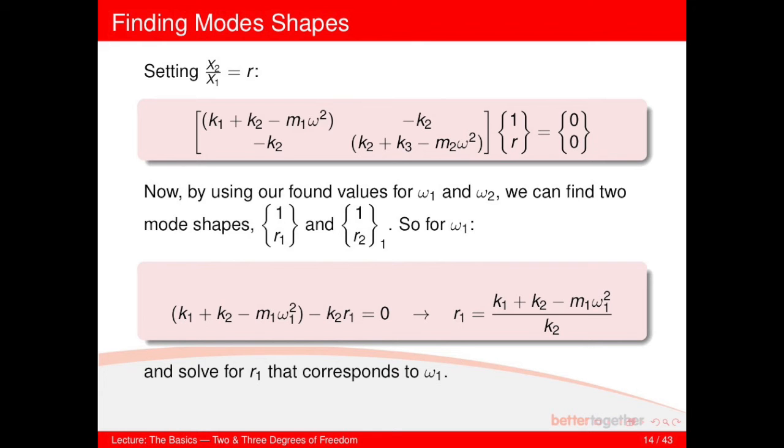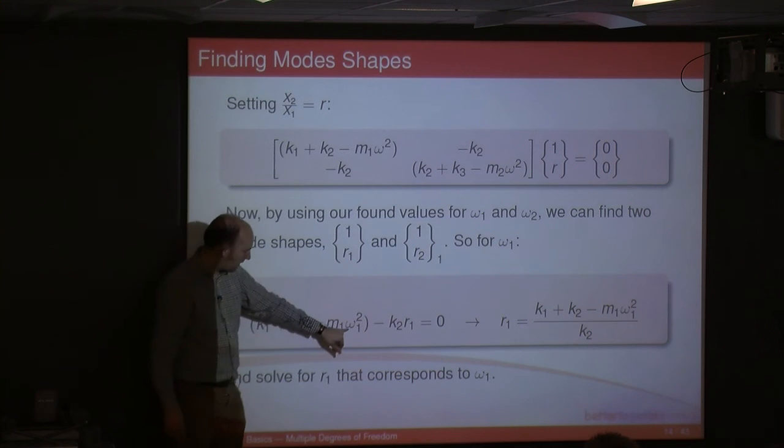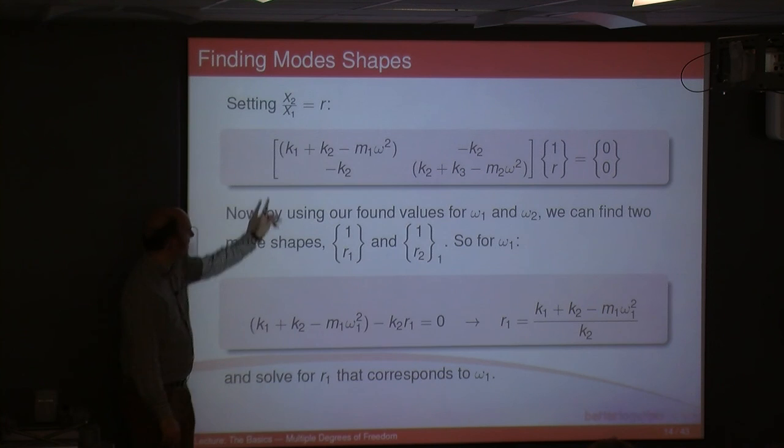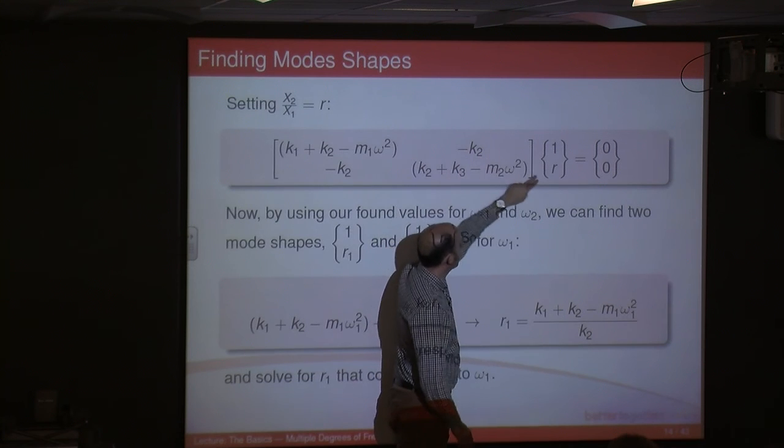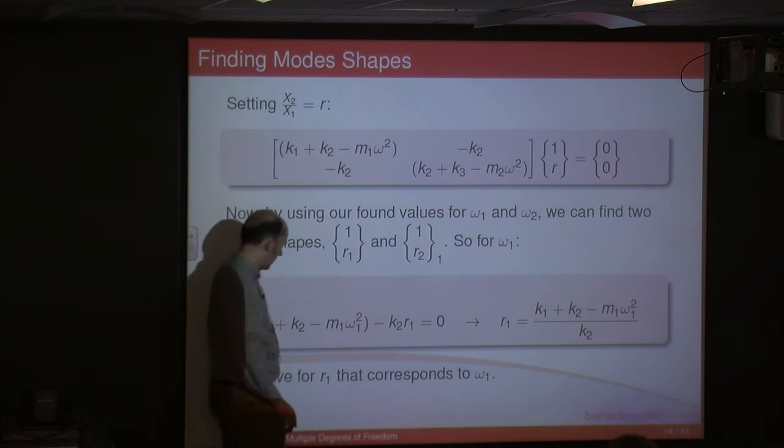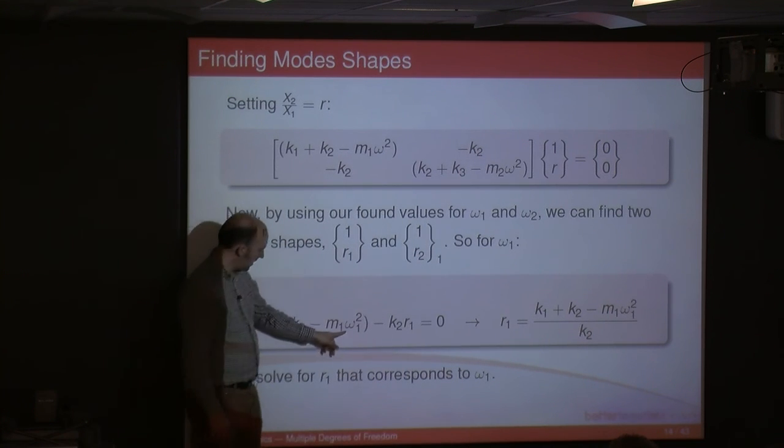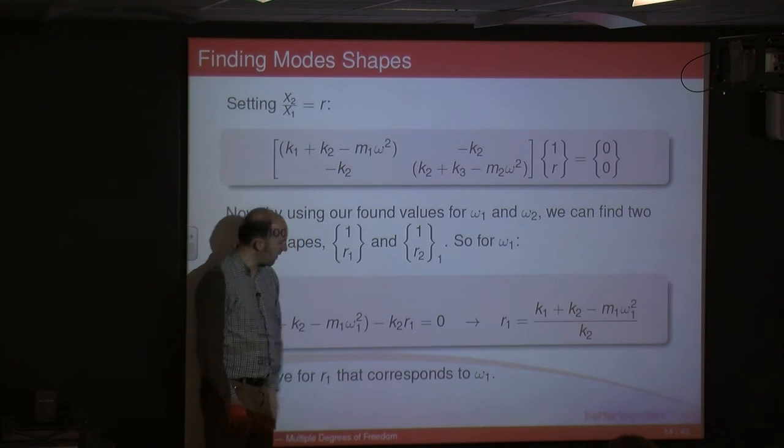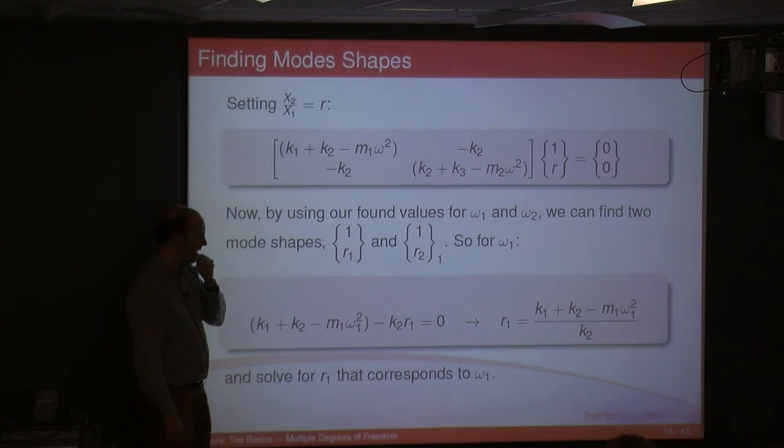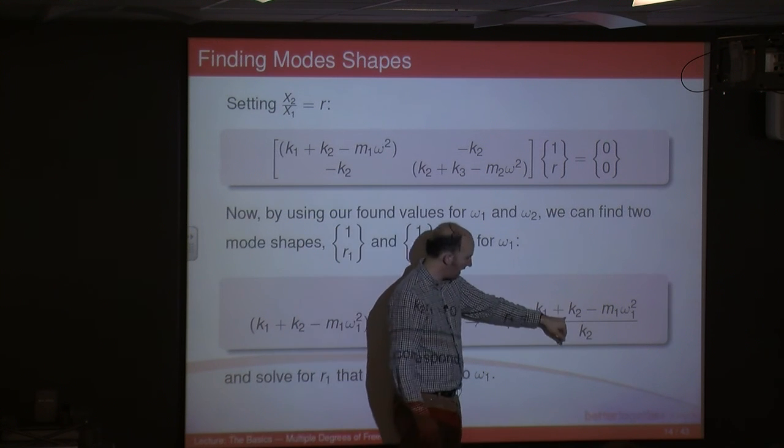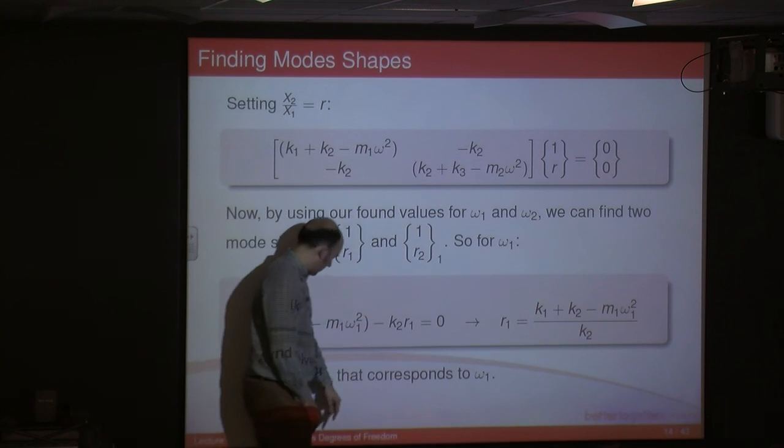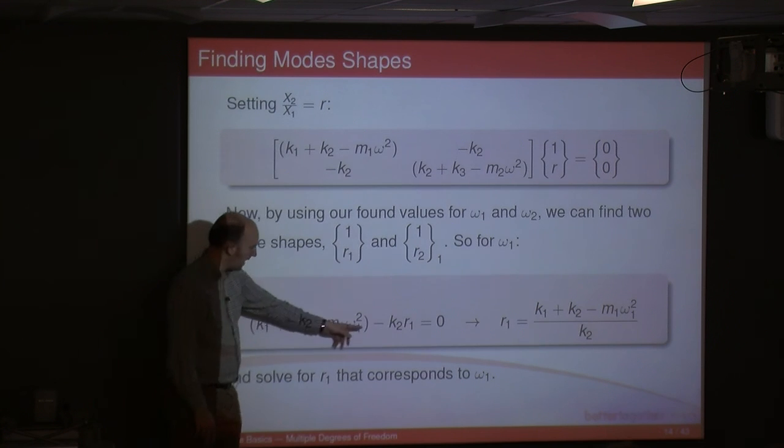So for the first mode shape, we stick omega 1 into here, and you can take the first line of the equation, so it's this term multiplied by 1, minus this term multiplied by R. So we end up with this term plus this term equals 0, because that's on the other side, and you can rearrange solving for R1. You find that R1 is k1 plus k2 minus m1 omega squared, so it's this term divided by k2.